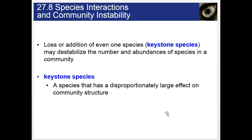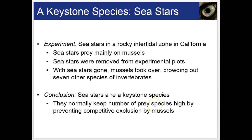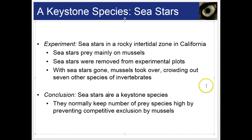Species interactions and community instability: loss or addition of even one species, like a keystone species, may destabilize the number and abundances of species in a community. A keystone species is a species that has a disproportionately large effect on community structure. In an experiment in a rocky intertidal zone in California, sea stars prey mainly on mussels; when sea stars were removed from experimental plots, mussels took over, crowding out seven other species of invertebrates. The conclusion: sea stars are a keystone species that normally keep the number of prey species high by preventing competitive exclusion by mussels.